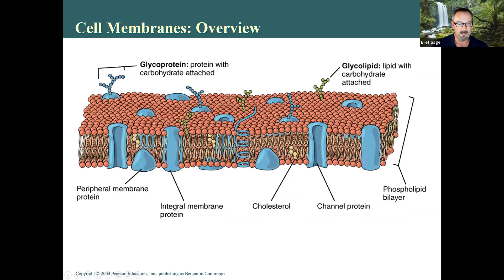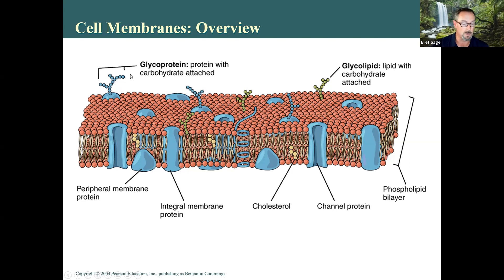This image shows the different molecules found in the cell membrane: the phospholipid bilayer, channel proteins that allow things in and out, integral membrane proteins that stabilize or act as enzymes, and glycoproteins — a protein with a carbohydrate attached. That carbohydrate is part of the glycocalyx, which the immune system uses to determine if a cell is part of you or an invader.